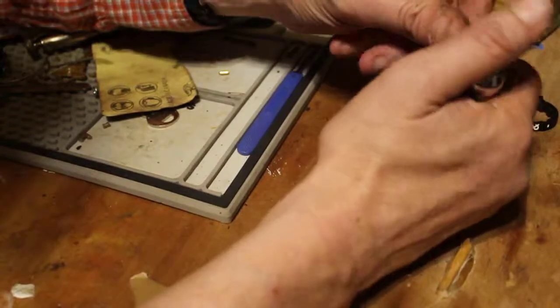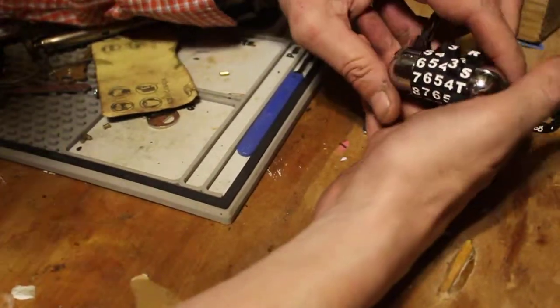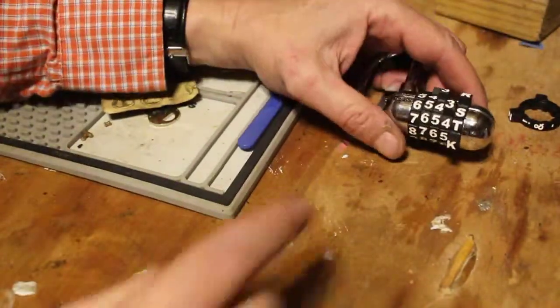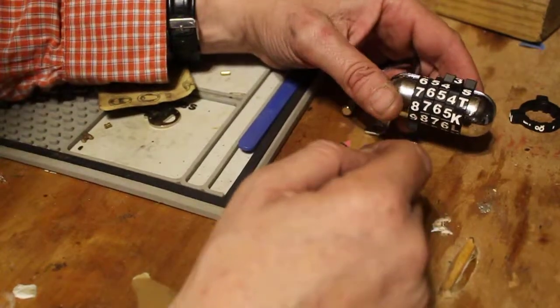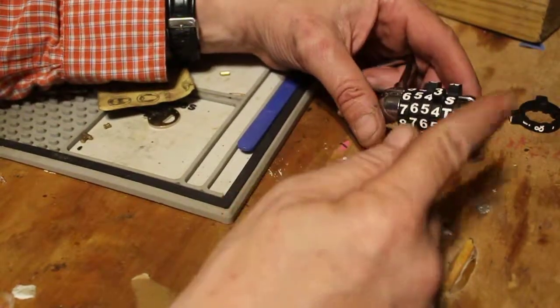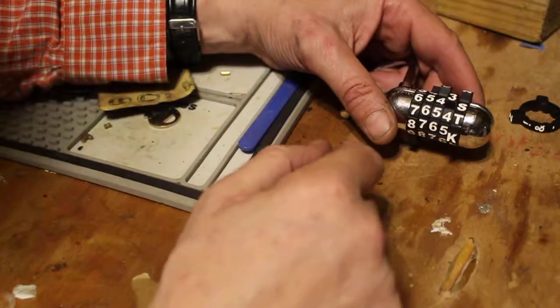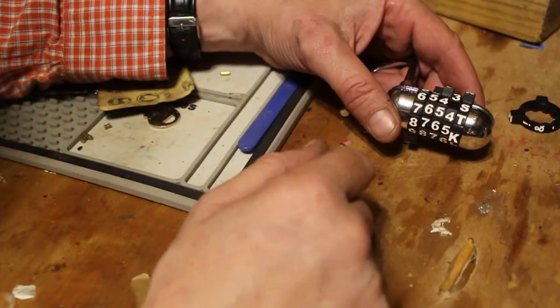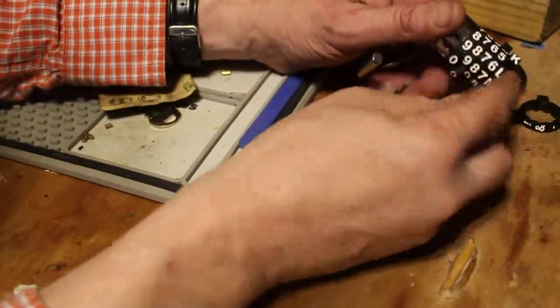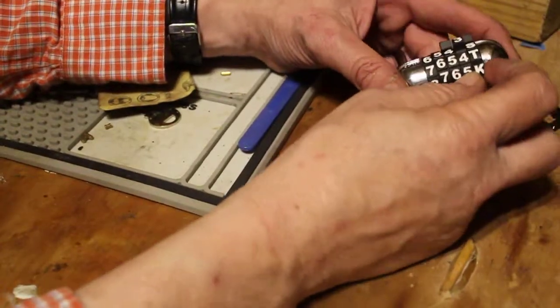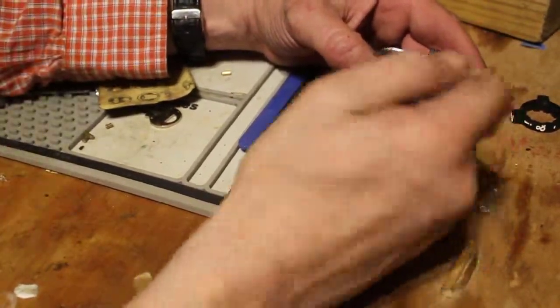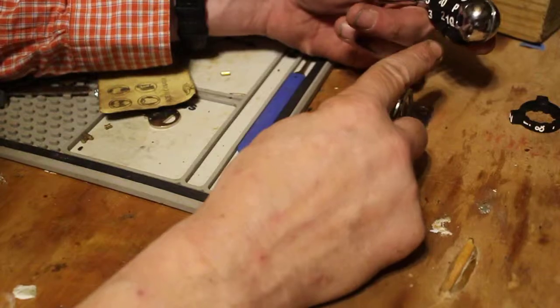The other method of opening these back up is a destructive method. These are simply plastic dials. If you just want to open one of these locks, don't care about the lock, don't care about ruining the lock, grab one of these with a pair of pliers, twist it, break it.